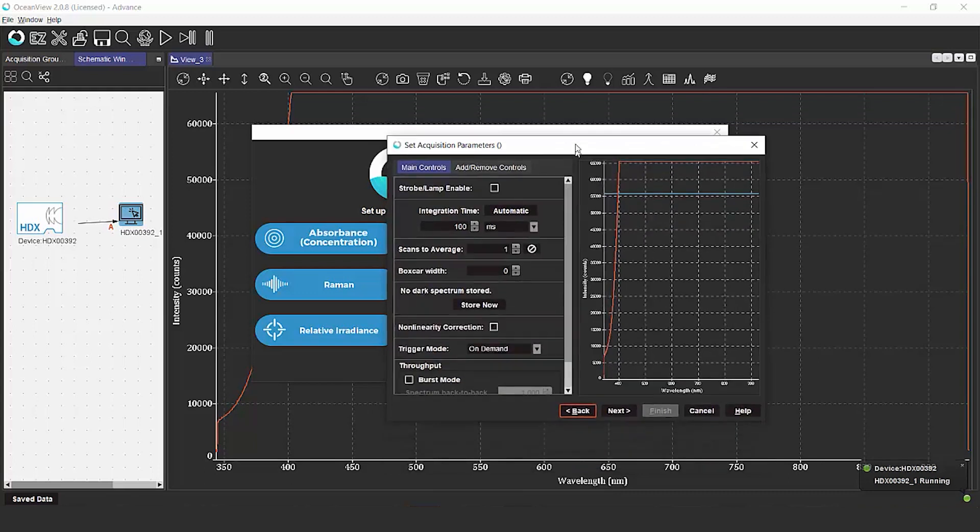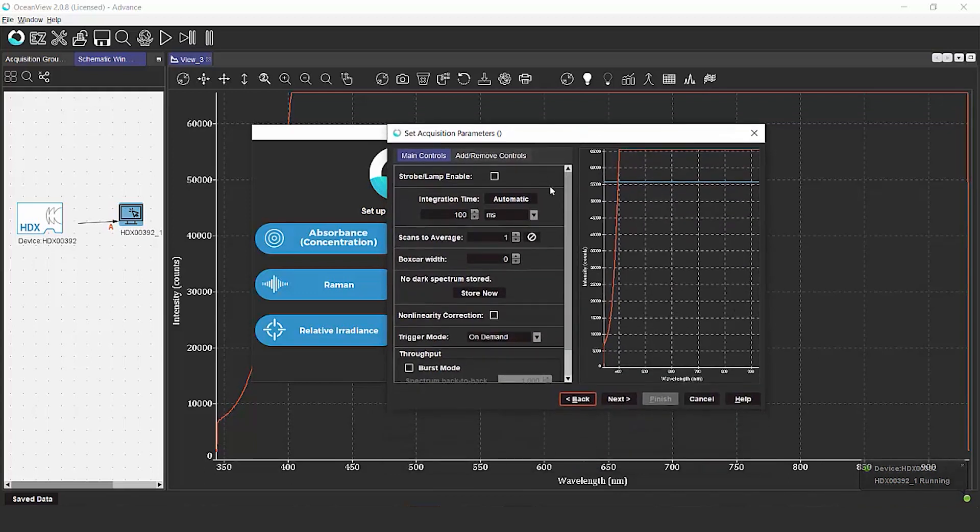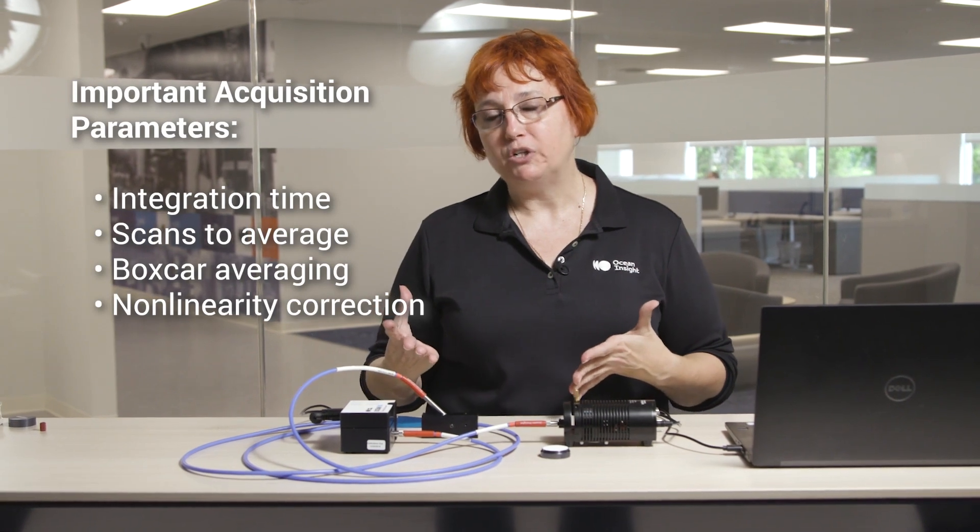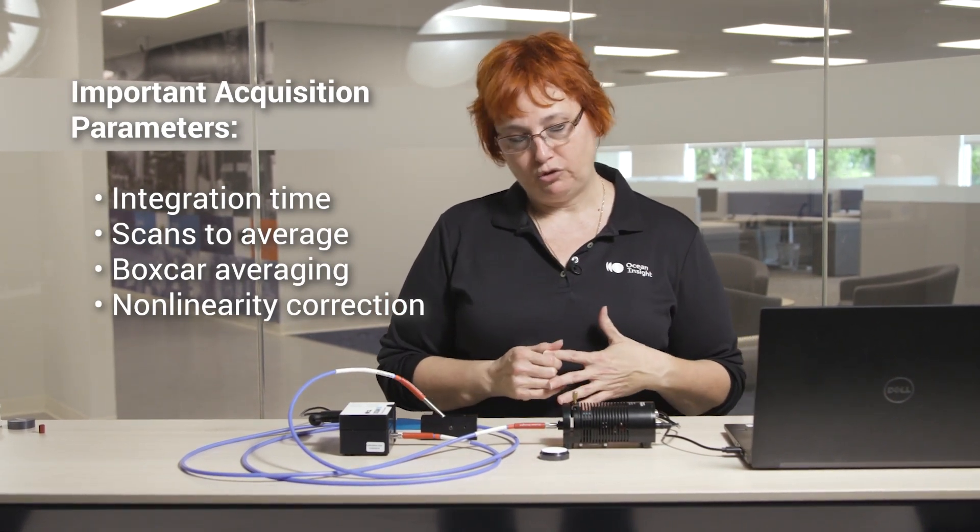Next we're going to set our acquisition parameters, and these are going to be the parameters that are used to determine how much light gets into the spectrometer, and even to help improve our signal-to-noise ratio.